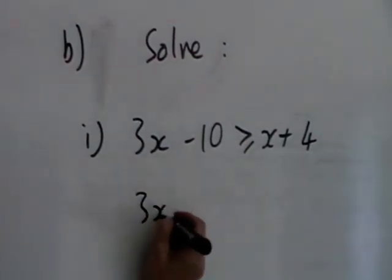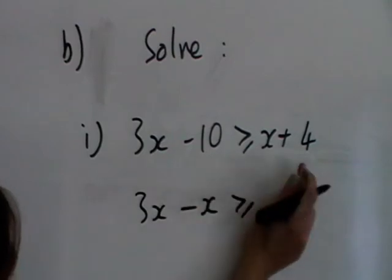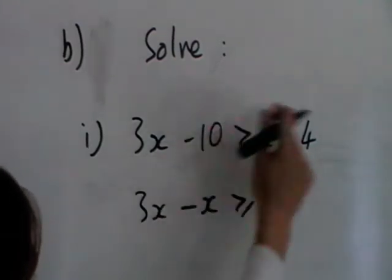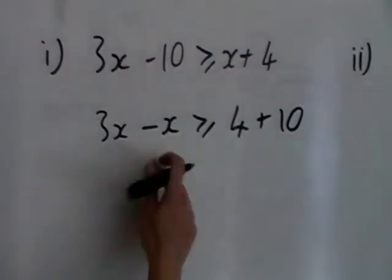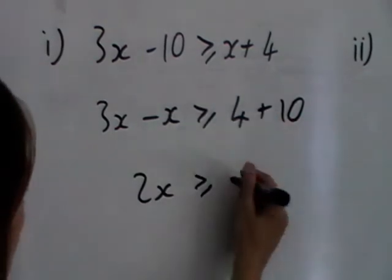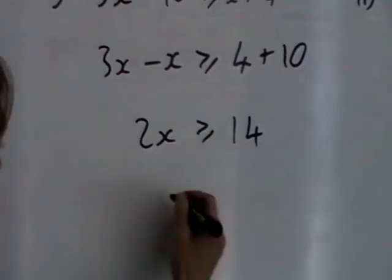So if we leave the 3x where it is, bring that x over so that will subtract on this side. Leave the 4 where it is, the 10 will then add on the other side. So if we simplify, we get 2x is greater than or equal to 14. To get the x on its own, we're going to divide both sides by 2.